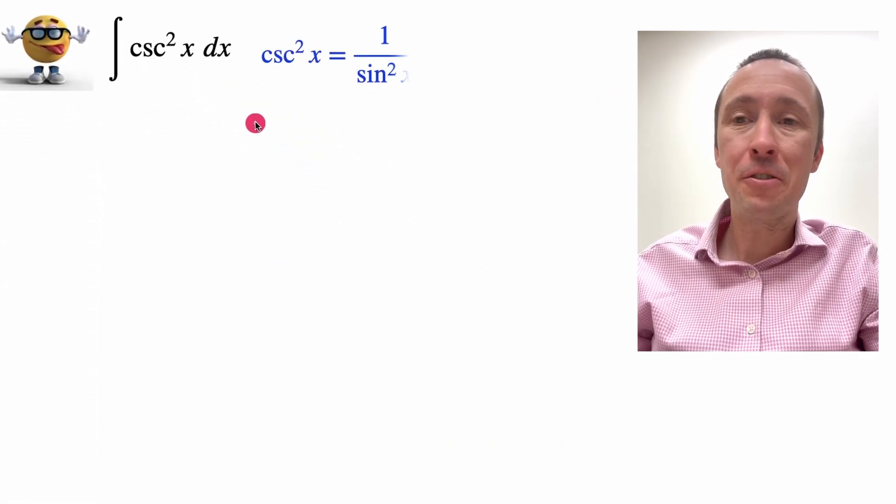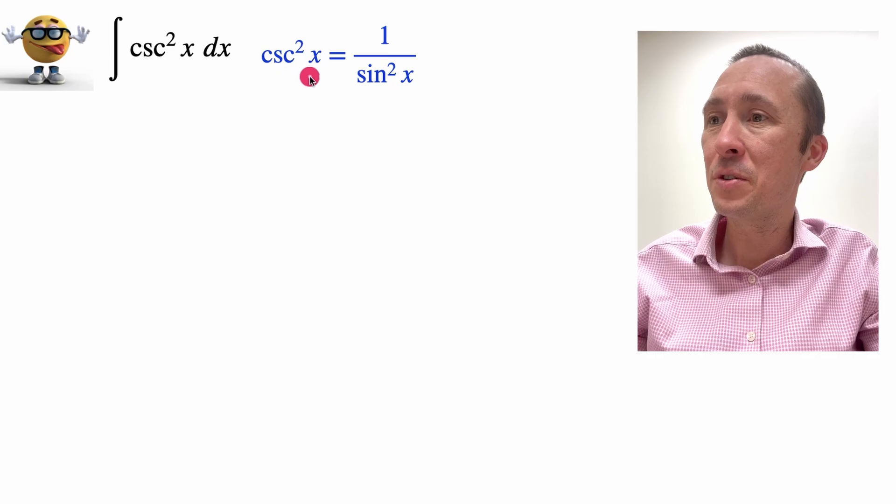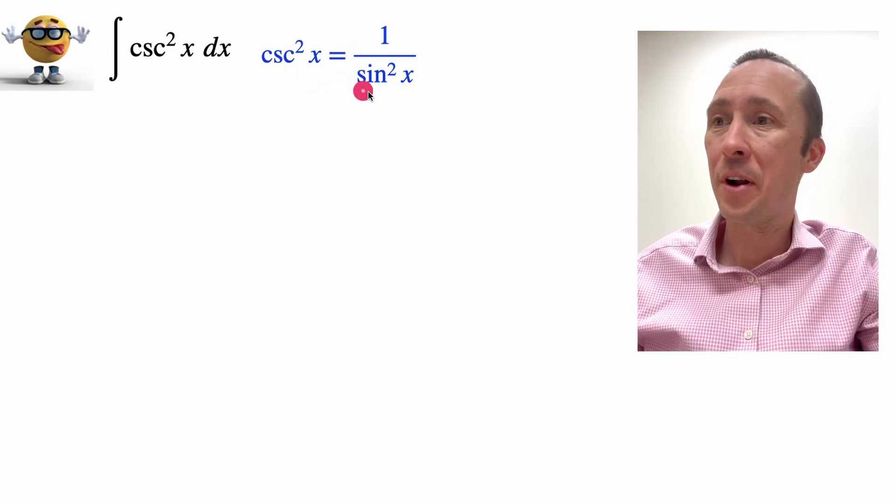My friends, there's a variety of different ways to integrate cosecant squared x. In this method, we're going to substitute cosecant squared x equals 1 divided by sine squared x.